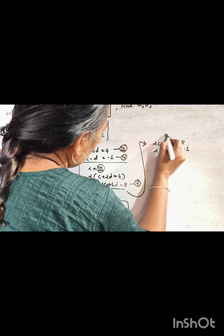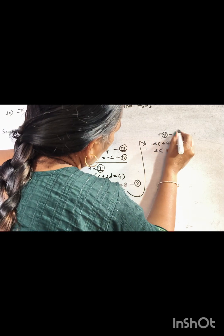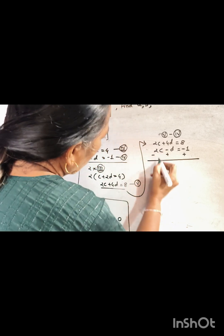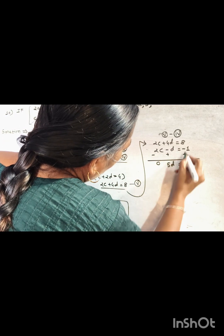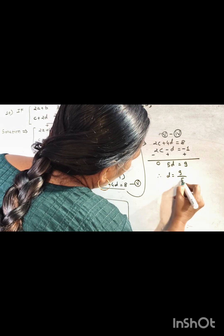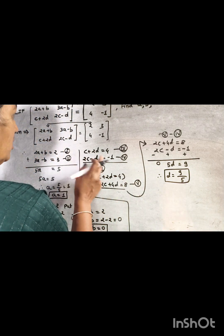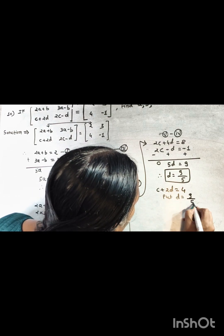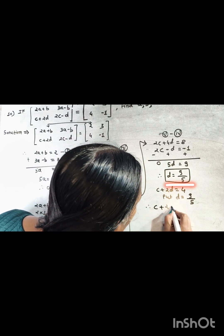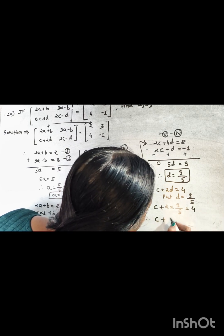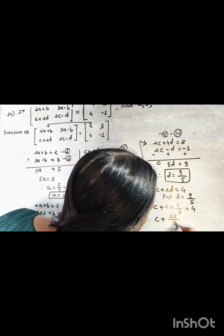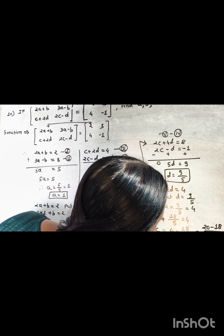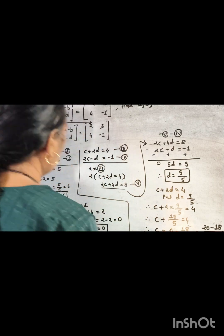We subtract the fourth equation from the fifth: 2c plus 4d equal to 8, minus 2c minus d equal to negative 1. Subtracting gives 5d equal to 9, therefore d equal to 9 upon 5. Now putting d equal to 9 upon 5 into the third equation c plus 2d equal to 4: c plus 18 upon 5 equal to 4, so c equals 20 minus 18 upon 5, therefore c equal to 2 upon 5.